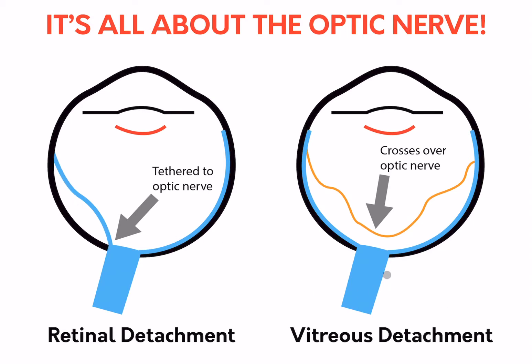As opposed to a vitreous detachment — when the vitreous detaches it can lie over the optic nerve and cross over it. It also is much thinner and has less echogenicity.